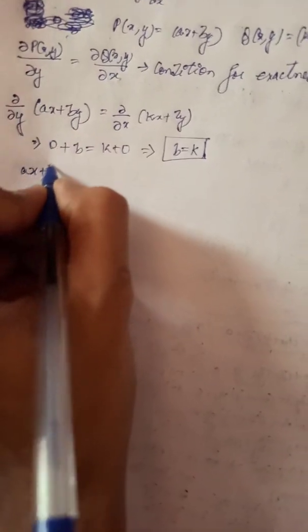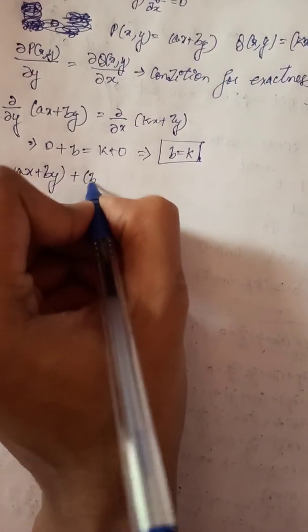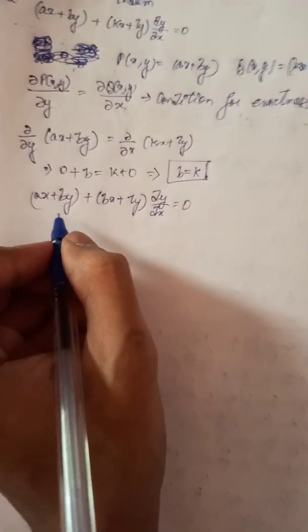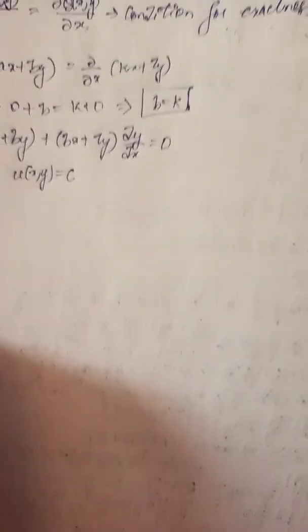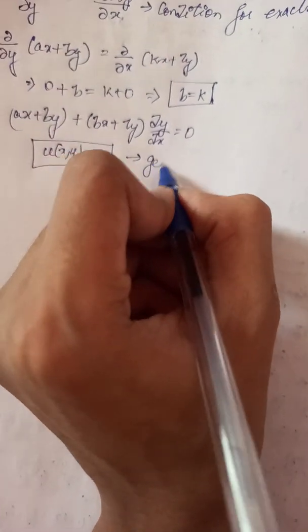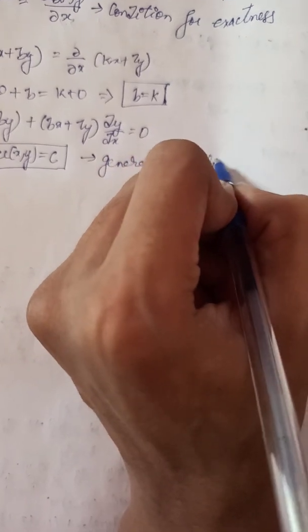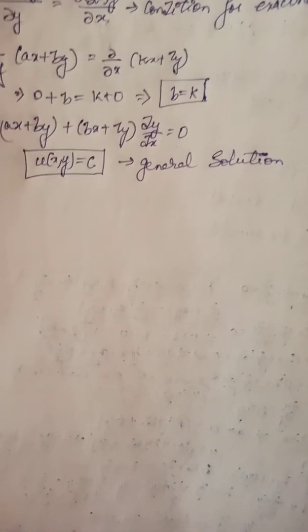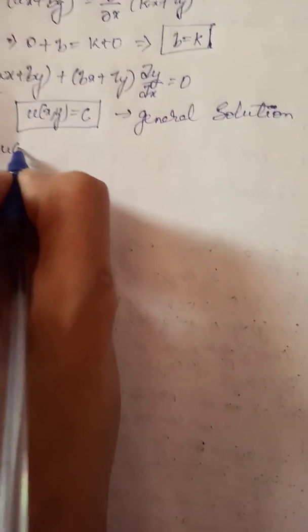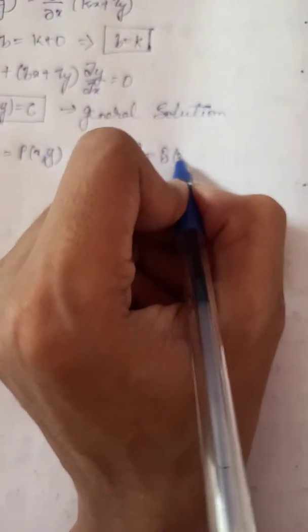So this is an exact ODE, and now we have to solve it. The general solution for an exact ODE is u(x,y) equals c, where c is any arbitrary constant. In order to find u(x,y) we have two conditions.